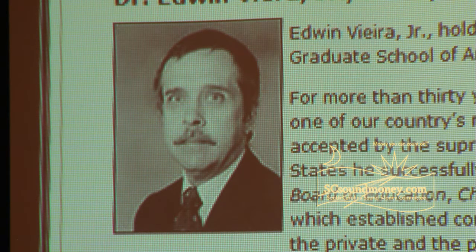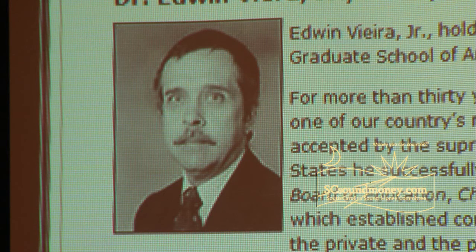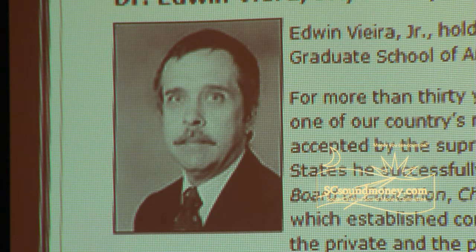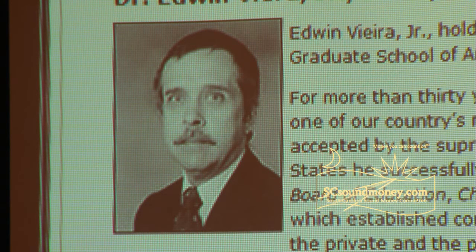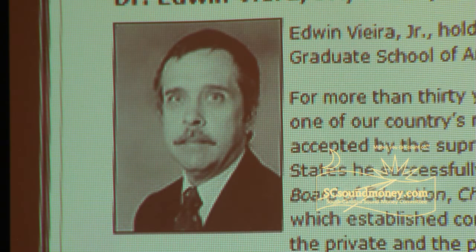Now, because of its placement in the Constitution, the state's power to make gold and silver coin a tender is effectively absolute. You don't hear that description of a constitutional power as absolute too often, but this is one of the cases where that description really fits. And this is a conclusion compelled by the important differences among the three clauses of Article 1, Section 10.